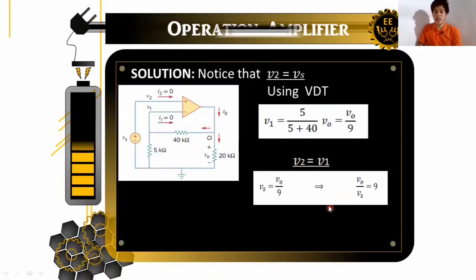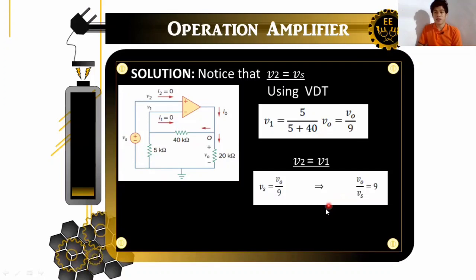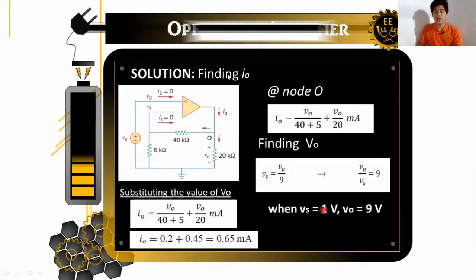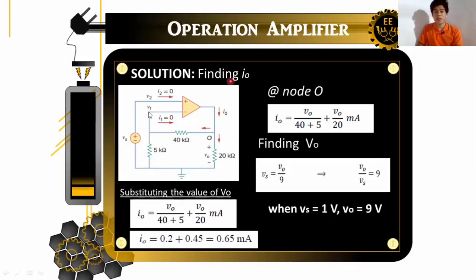And then, the next one is our I sub O. So, how to get our I sub O. Finding I sub O from our circuit again. So, as we can see here, this is our I sub O. And then, current passed through here and there. So, the value of our I sub O was divided.